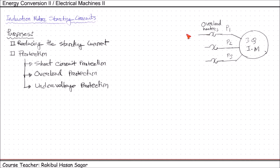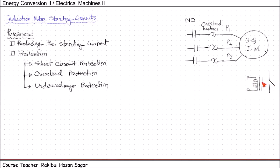Next we will connect three magnetic contactors M1, M2, M3 — which are normally open (NO). These contactors are operated based on the energizing of a coil. If we have a coil and a normally open switch, when the coil is energized, due to the magnetic effect the switch will be connected. If the coil is de-energized, the switch will remain open. So normally open means when the magnetic circuit is de-energized, the switch is open.